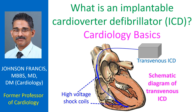The ICD senses and analyzes heart rhythm continuously. It can detect life-threatening ventricular arrhythmias and treat them electrically. If a ventricular tachycardia is detected, the ICD tries to overdrive it by fast pacing. If it does not suppress the ventricular tachycardia, the ICD delivers a shock through its high voltage coils and terminates the arrhythmia.